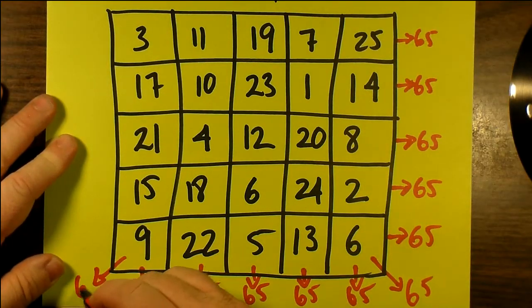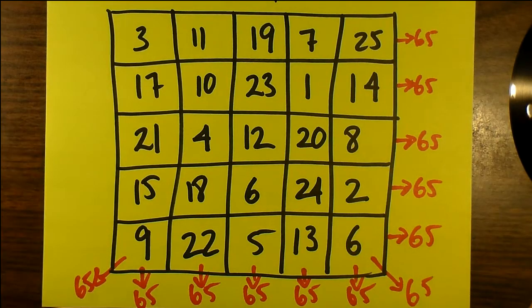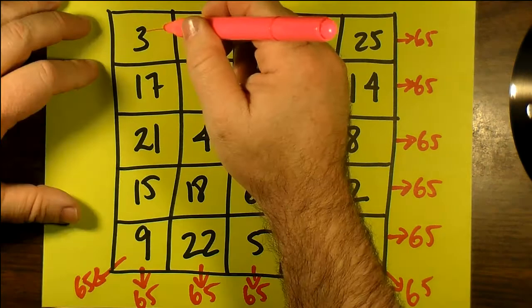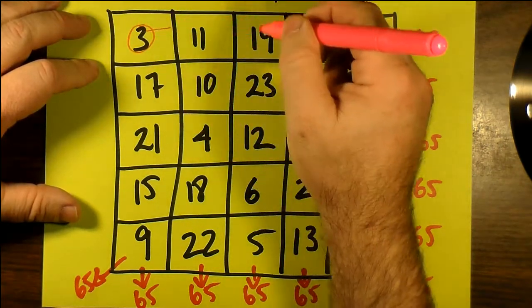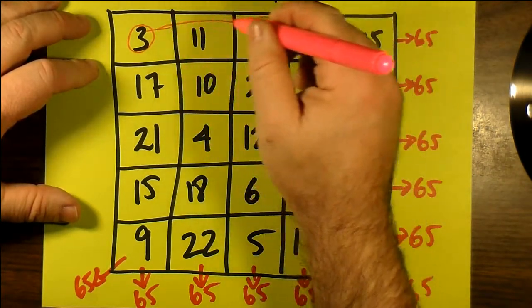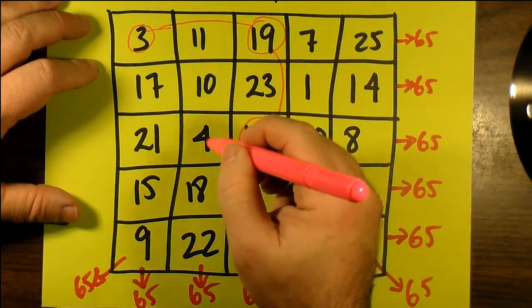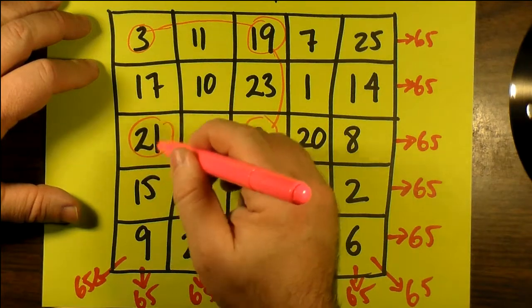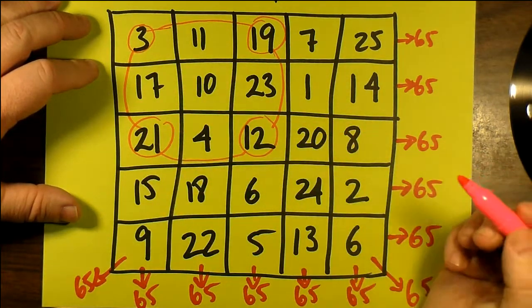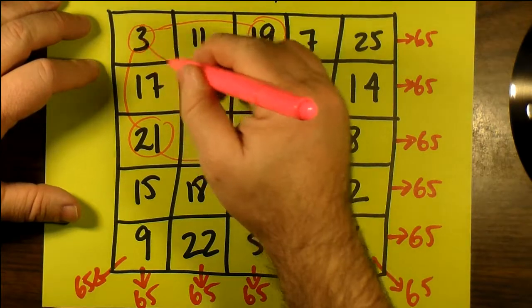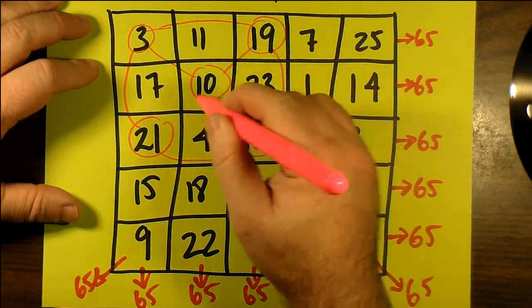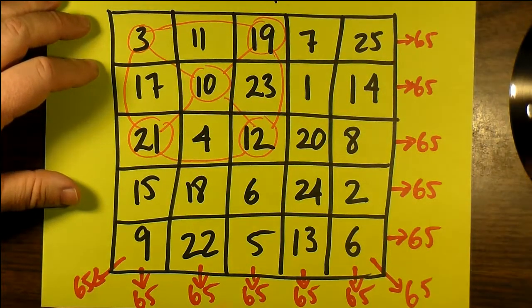But of course there's more to this, there's more in terms of what adds up to 65. If we divide the magic square into 3x3 sub-squares, we will notice that all possible 3x3 sub-squares, if we take the corners of those 3x3 sub-squares plus the middle square, they will all add up to 65.